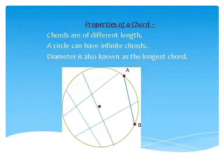Next, the properties of a chord. Chords are of different length. A circle can have infinite chords. And the diameter is also known as the longest chord. As children, you can see in the circle there are so many chords.